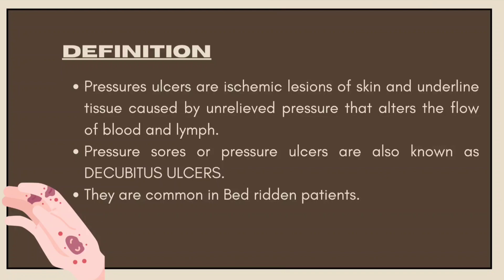So what are pressure ulcers? Pressure ulcers are ischemic lesions of skin and underlying tissue caused by unreliable pressure that alters the flow of blood and lymph. Ischemic means nothing but damaged tissue. It is called pressure ulcers.